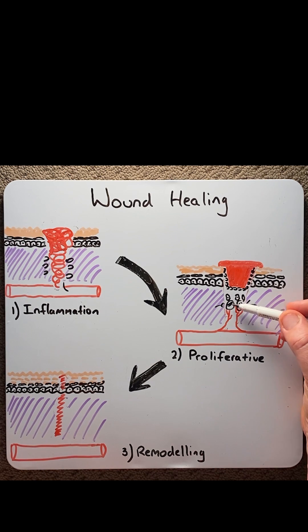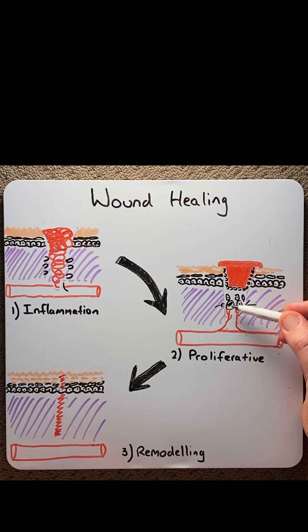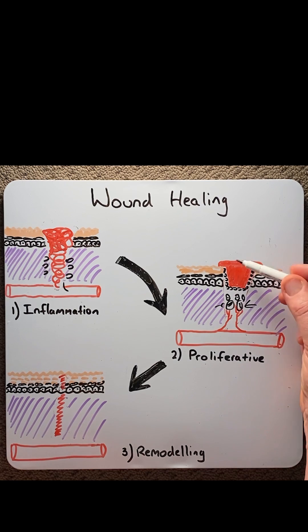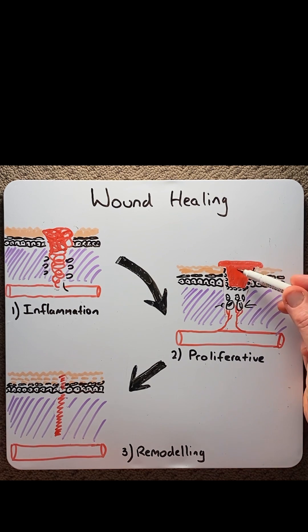And finally, the fibroblasts would lay down new collagen and extracellular matrix, which gives a good scaffold for new tissue to form.